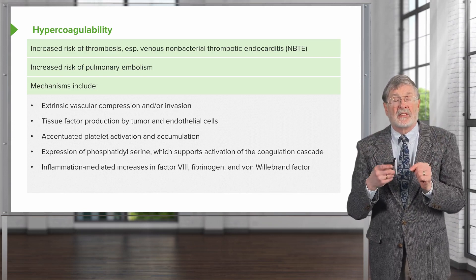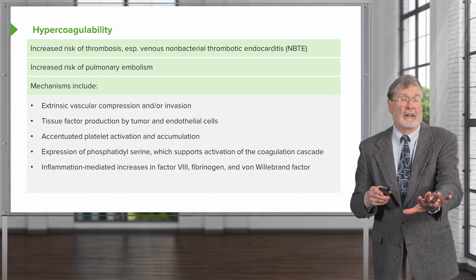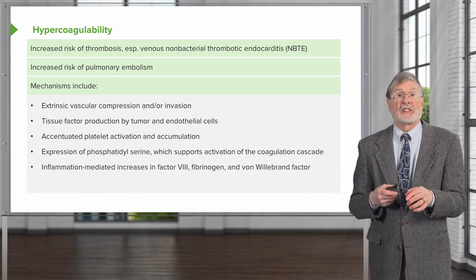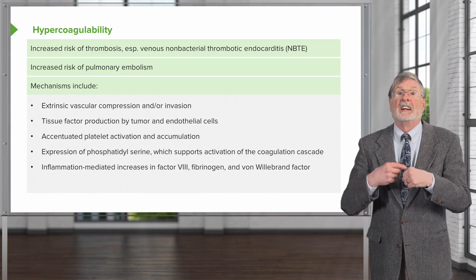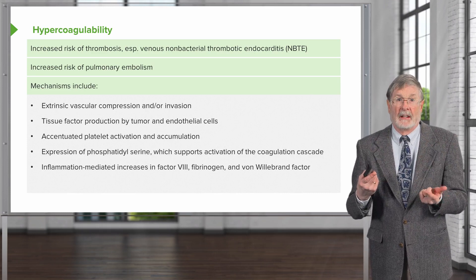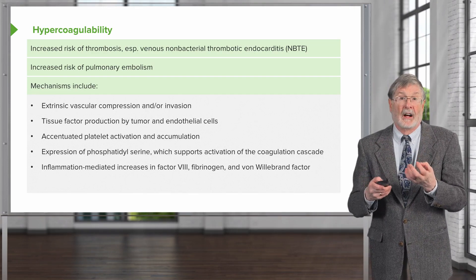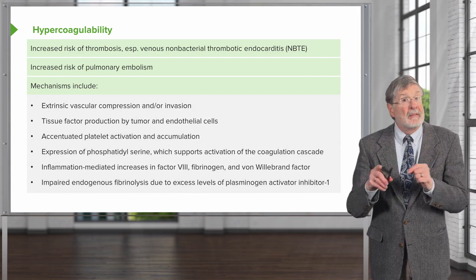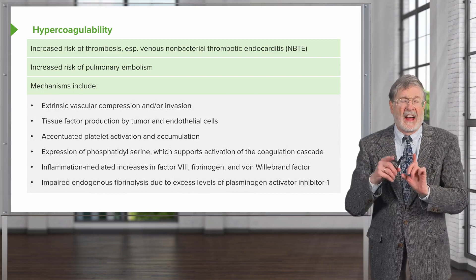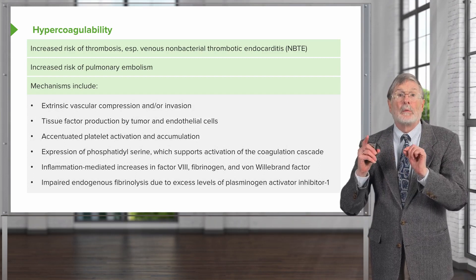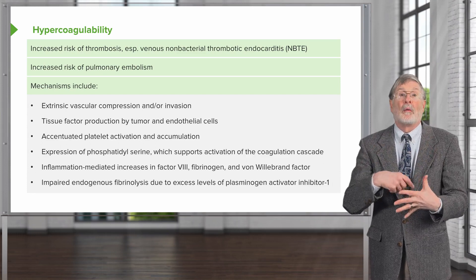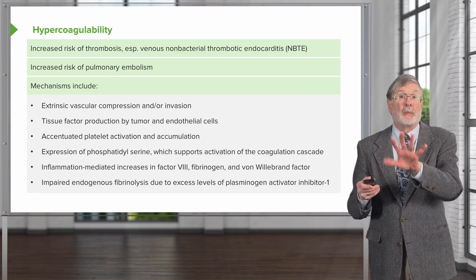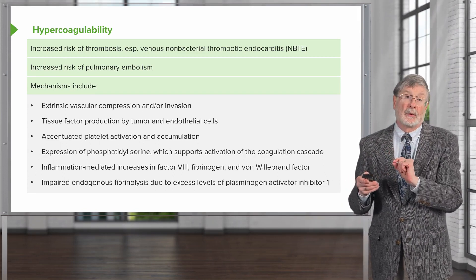The same inflammation — such as interleukin-6 — that's driving the production in the liver of hepcidin is also driving in the liver the production of coagulation factors 8, fibrinogen, and von Willebrand factor, so that's going to increase the coagulability of blood. And finally, because the tumor and tumor vasculature are expressing higher levels of plasminogen activator inhibitor, we will see a tendency to a more prothrombotic state. The endogenous fibrinolysis that normally occurs will be inhibited by that plasminogen activator inhibitor 1 expression.